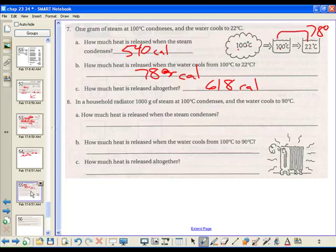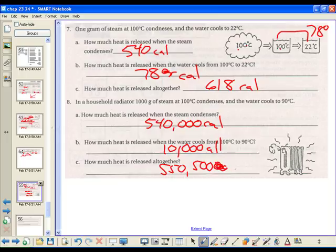So then they tried the macro scale, so we have a radiator, 1000 grams of steam condenses. Well, if one gives off 540, 1000 is going to give off 540,000 calories. Then it's going to cool from 100 to 90, that was kind of our demonstration, it comes down pretty rapidly. 100 to 90, well, if I had one gram going from 100 to 90, that would be 10, but I have 1,000. 1,000 times 10 is 10,000 calories, so a total of 550,000 calories.